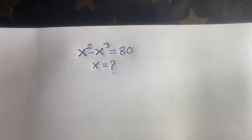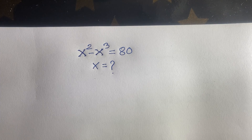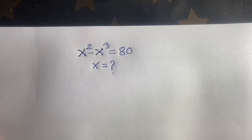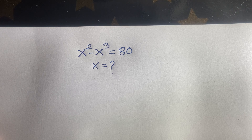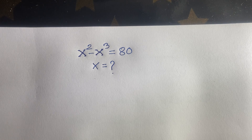Hello everyone. In this video we have solved this German Math Olympiad question. The question is: x squared minus x cubed is equal to 80. What is x? So how to solve this math olympiad question?